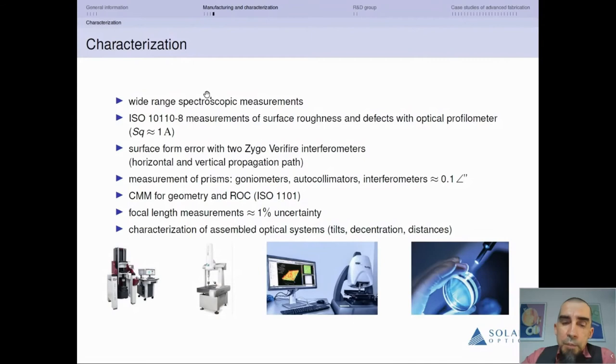The measurement capabilities of Solaris are pretty well equipped. We have goniometers, autocollimators, two Zygo interferometers with horizontal and vertical propagation paths which is really important. We have instrumentation to characterize optical assemblies, surface micro roughness, surface wave fronts, and surface forms. Basically everything is characterized at Solaris.